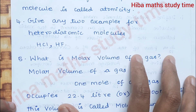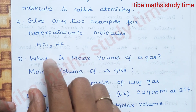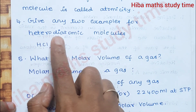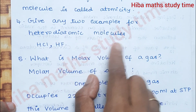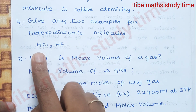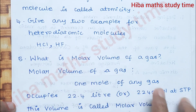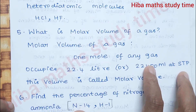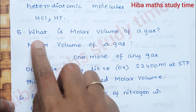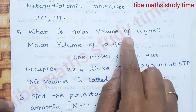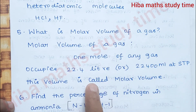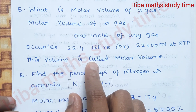Next question: Give any two examples of heterodiatomic molecules. HCl and HF.